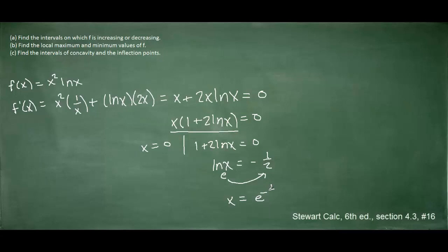On the other side, we have x equals 0 as a critical number. But if you plug 0 into the original function, you would find an error because the natural log of 0 is undefined. So x = 0 is not part of the domain of the function, and therefore we exclude it as a critical number.